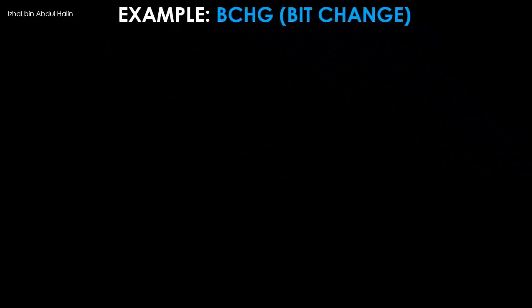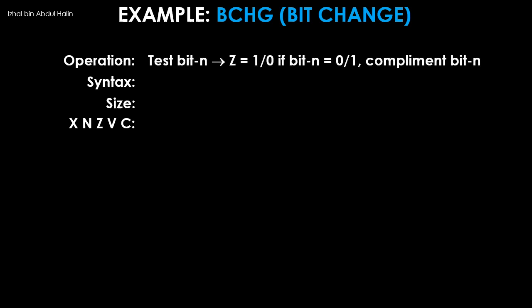The first example is the BCHG instruction. It stands for bit change. It is used to test and complement the value of a particular bit in an operand. The Z flag changes to one if the tested bit value is zero. The bit is then changed to one. Or if the tested bit value is one, the Z flag changes to zero, then the bit tested is changed to zero.